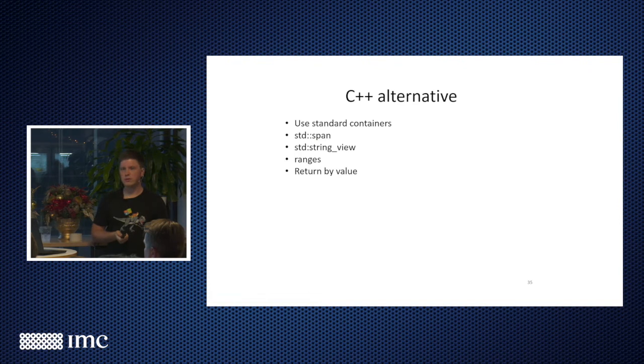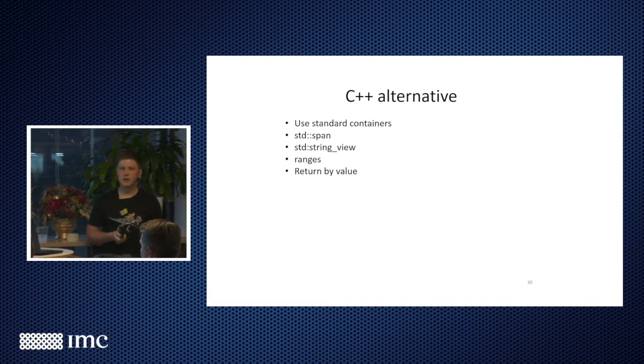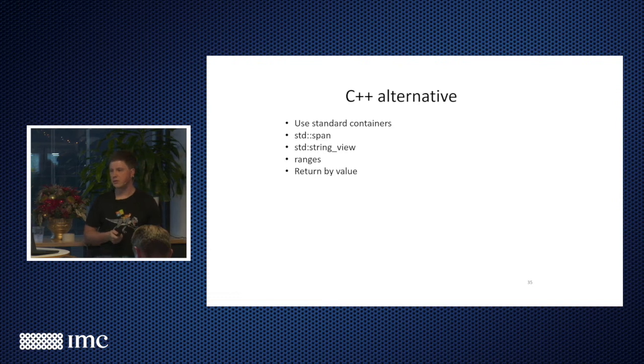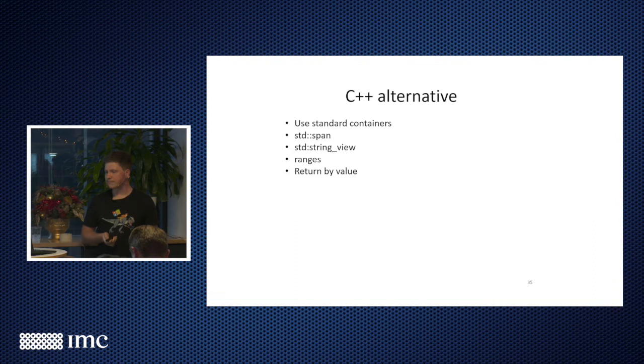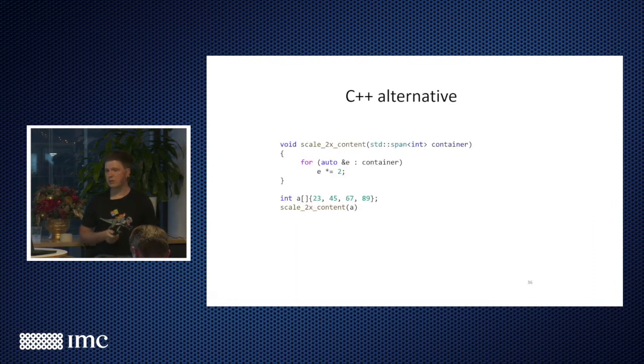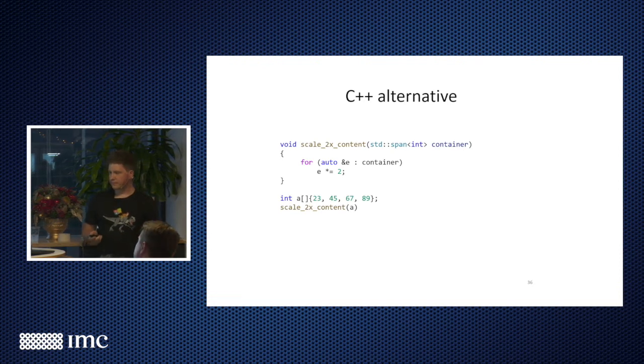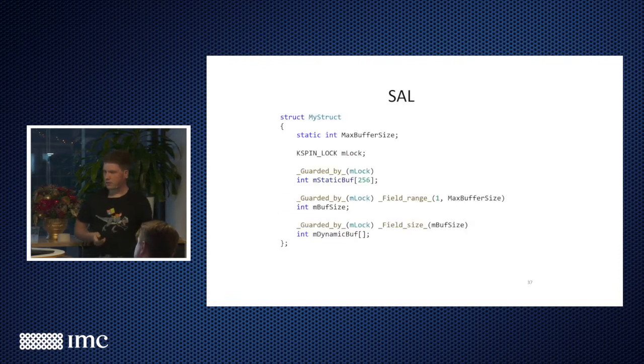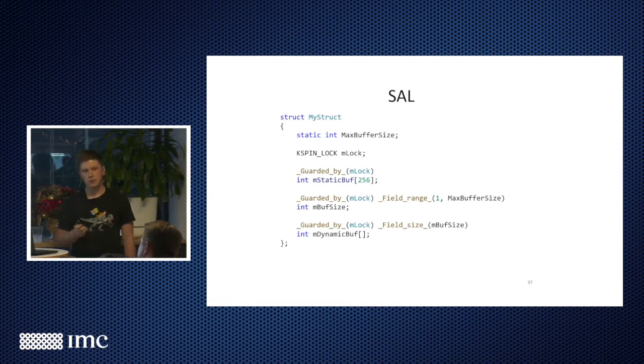There's a lot of ways to deal with this in C++. You can use standard containers. You can use, if you like and you have C++20, you can use span, string view, ranges, all sorts of things. So here's an example how to do this with span, for example. So for me, the most useful, those are simple examples. For me, the most useful ones are related to locks. I work in kernel land. Kernel is multithreaded, heavily multithreaded. So I have to live with multithreading.